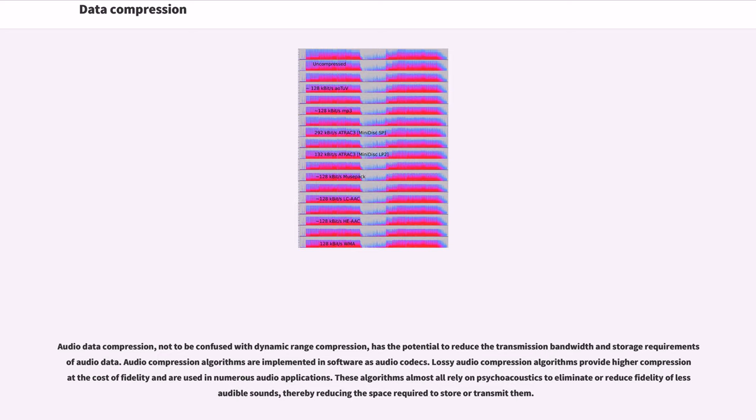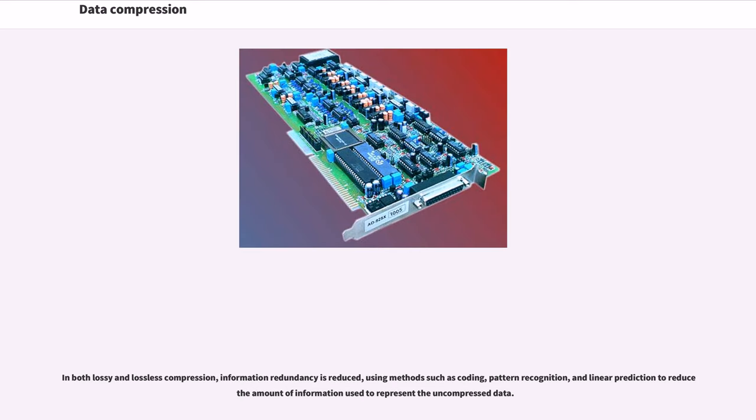Lossy audio compression algorithms provide higher compression at the cost of fidelity and are used in numerous audio applications. These algorithms almost all rely on psychoacoustics to eliminate or reduce fidelity of less audible sounds, thereby reducing the space required to store or transmit them. In both lossy and lossless compression, information redundancy is reduced using methods such as coding, pattern recognition, and linear prediction to reduce the amount of information used to represent the uncompressed data.